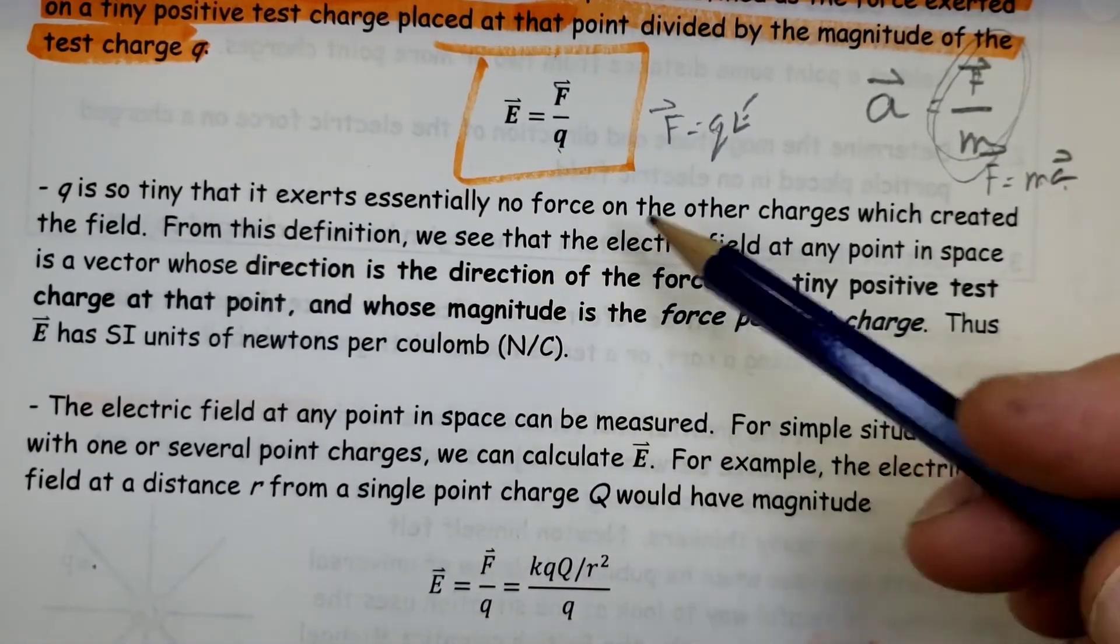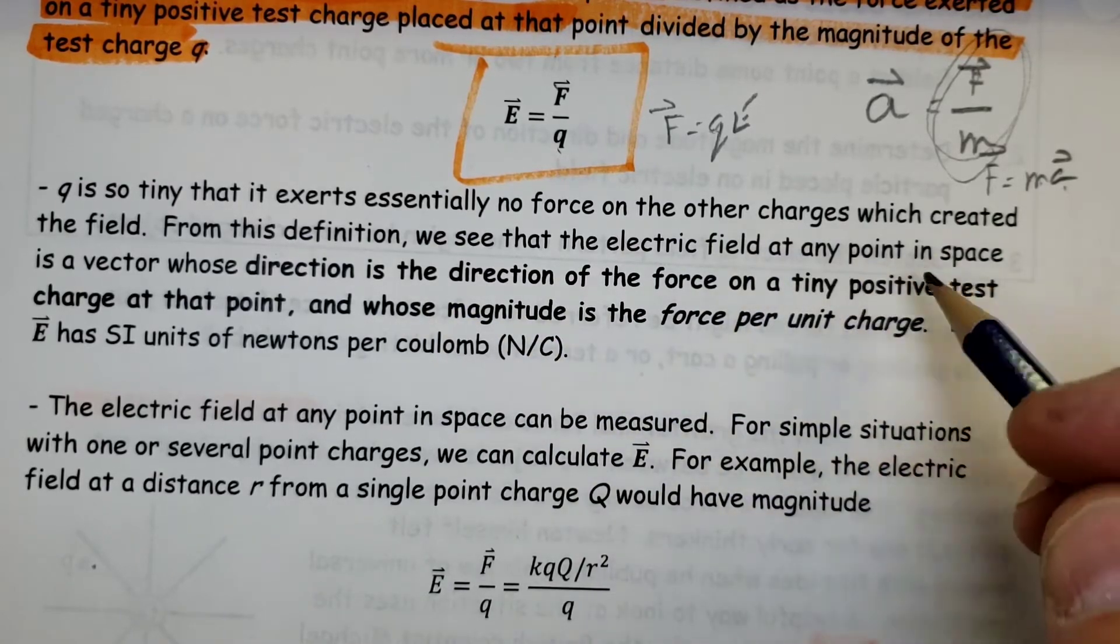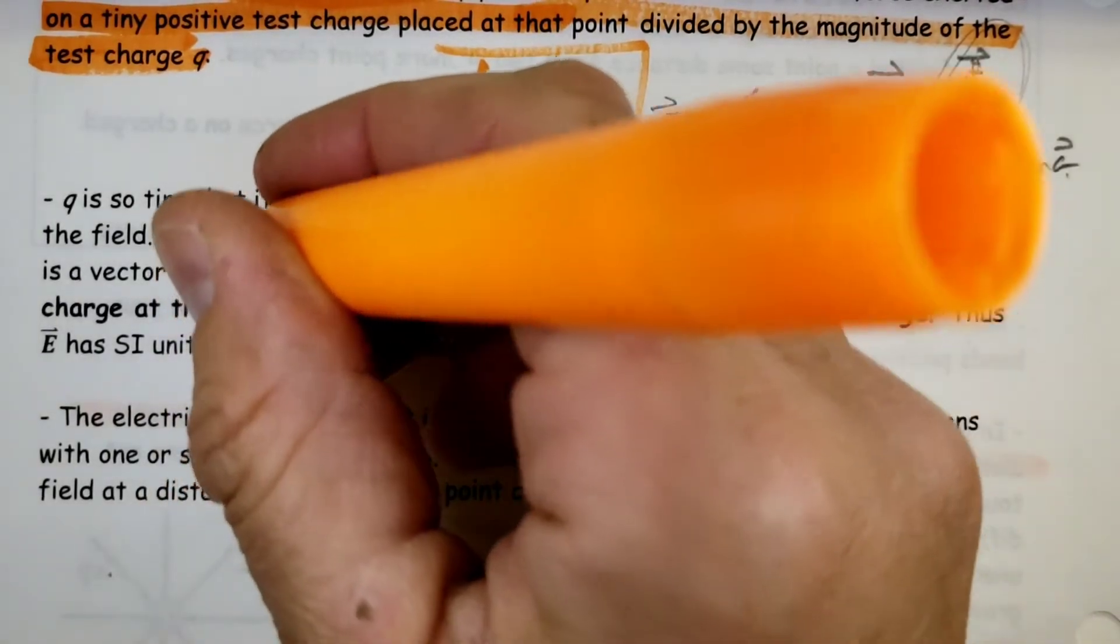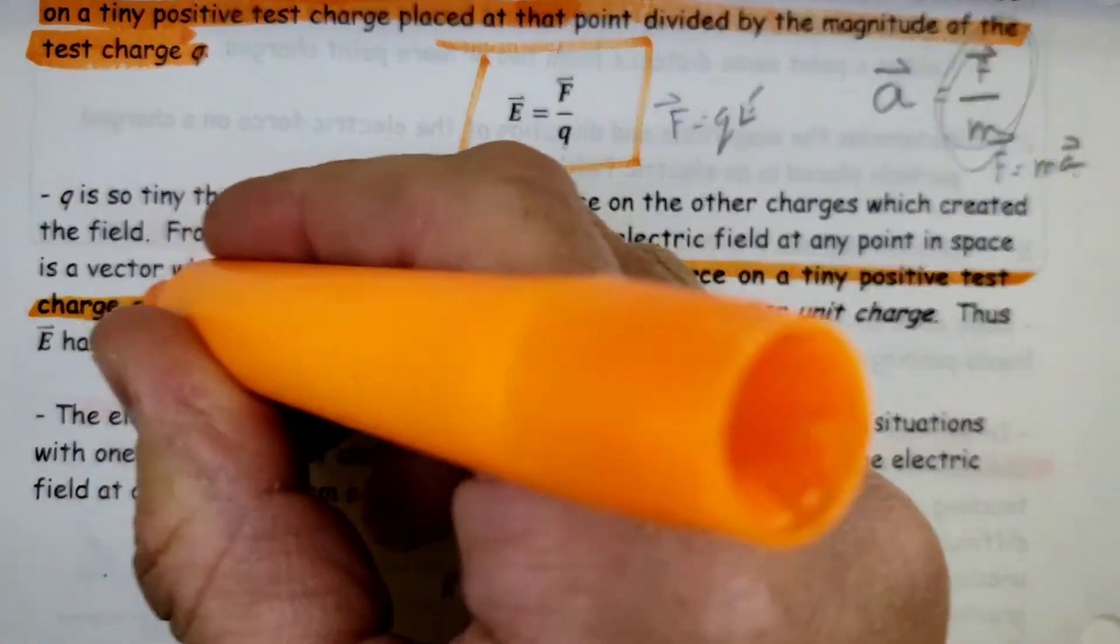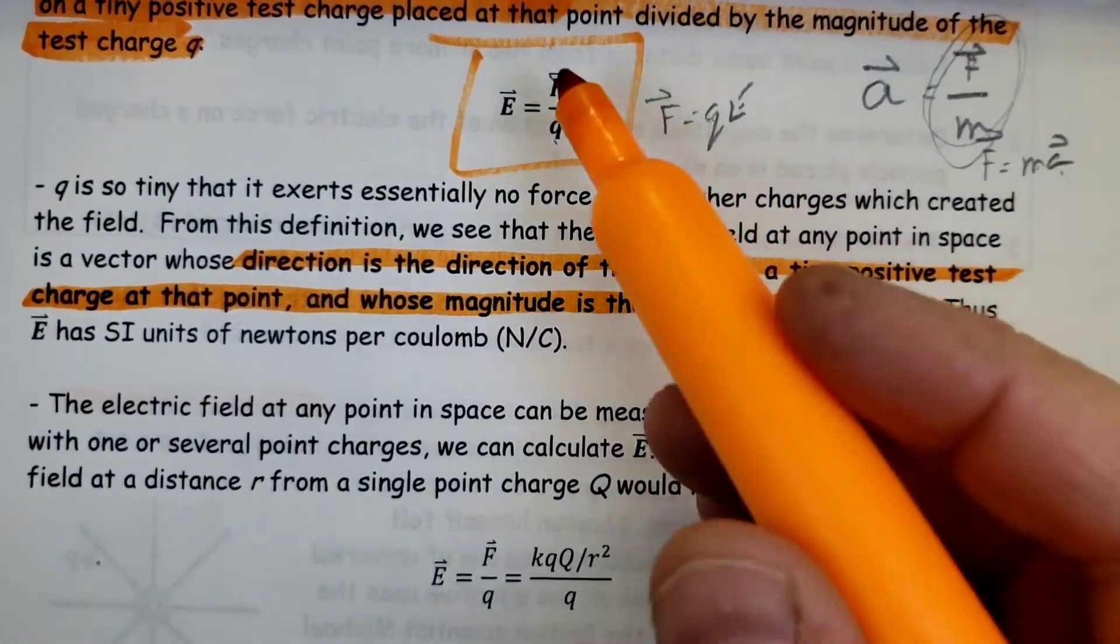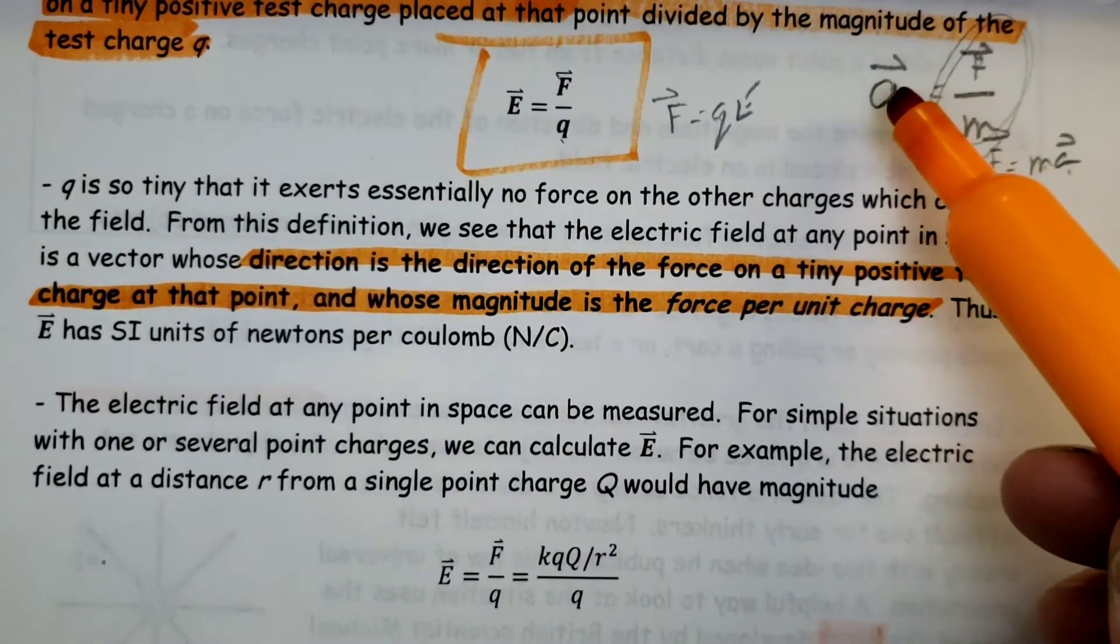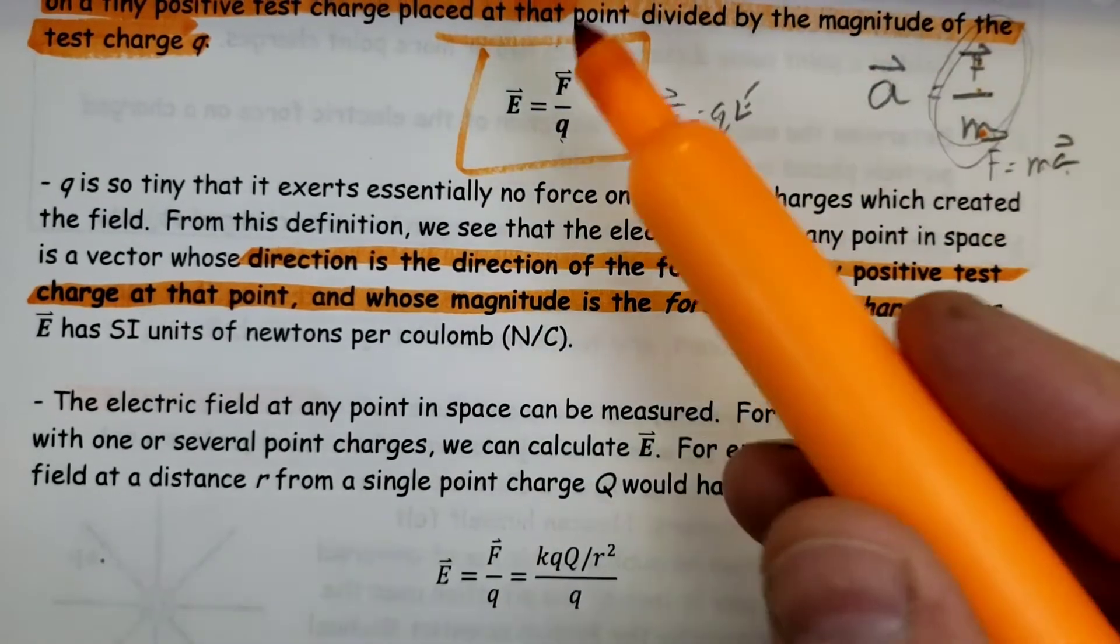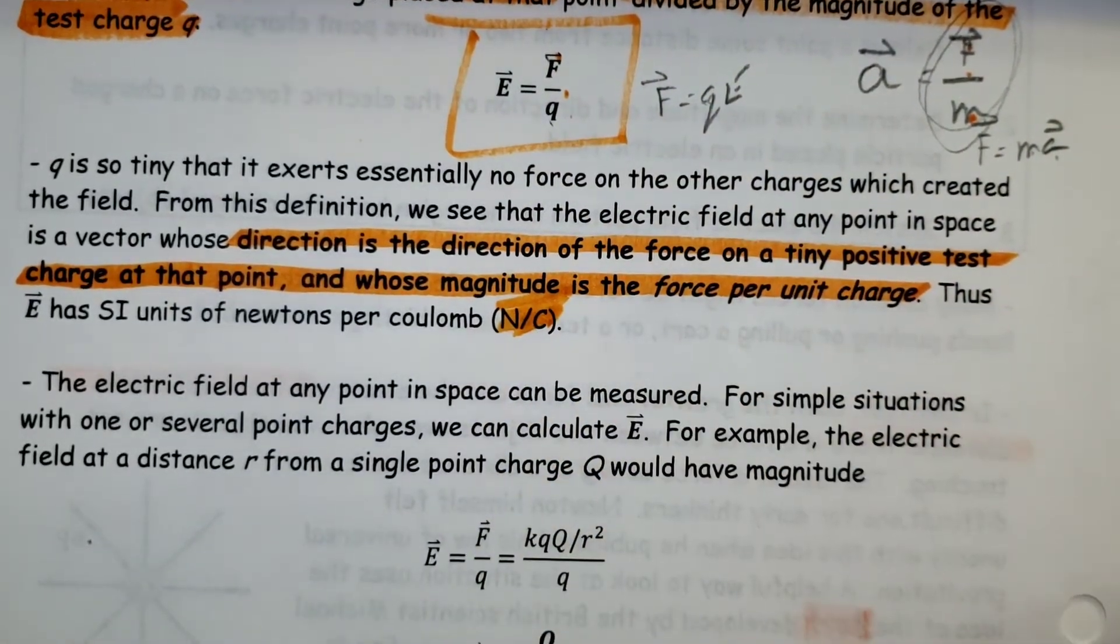Q is so tiny that it exerts essentially no force on the other charge which created the field. From this definition, we see that the electric field at any point in space is a vector whose direction is in the direction that it experiences a force. And it's a force per unit of charge. Newtons per coulomb is for electric field strength.